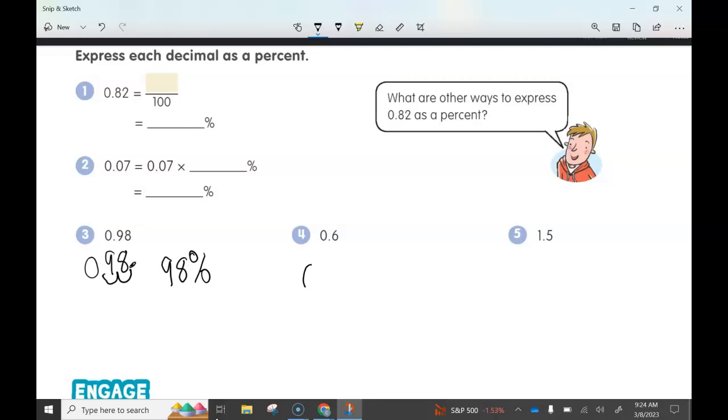Number 4, 0.6. Take that decimal point, move it two places to the right. There's one, and there's two places. Whenever we're moving around an invisible number, you always drop a zero for that invisible number. That's going to give us 60%.